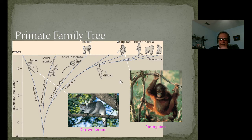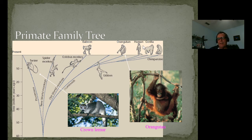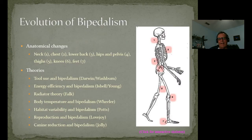Looking at the primate family tree, there were prosimians, new world monkeys, old world monkeys, and then the hominids that include the gibbon, orangutan, gorilla, human, and chimpanzee. All of these are our relatives. There's a common misconception that a monkey gave birth to a human — that's not how it happened. We're cousins. We evolved about the same time and just went in different directions due to the environment and the advantages required in that environment.